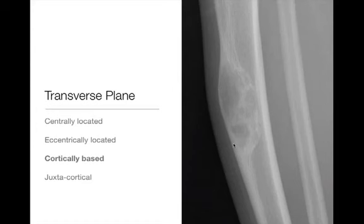This is a lesion arising from the cortex of the tibial diaphysis — a geographic lytic lesion, cortically based, narrow zone of transition, sclerotic border. This turned out to be osteofibrous dysplasia, which is a good place for them to occur, within the cortex of the bone.